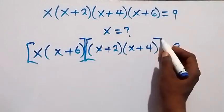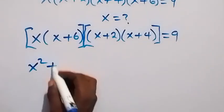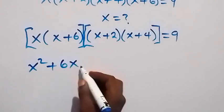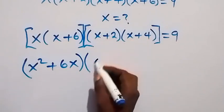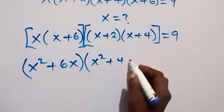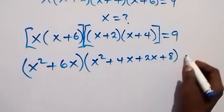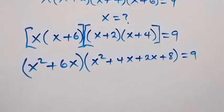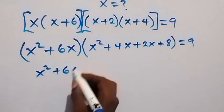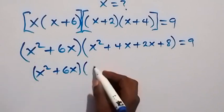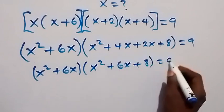Then we group this now into 2. We expand from here and this becomes x squared plus 6x. Also here we expand: x multiplied first, we have x squared plus 4x, then 2 multiplied by x, we have plus 2x plus 8, then it equals to 9. We can add like terms together, so we have x squared plus 6x, then multiplied by x squared plus 6x, then plus 8, equals to 9.